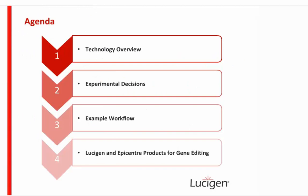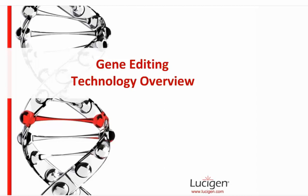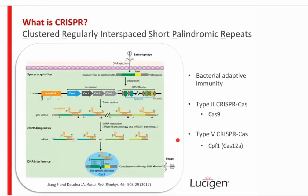For today's presentation we'll start with a technology overview — a brief background about CRISPR, how it works, and how it works in the lab. Then we'll go into some experimental decisions, because when you're first starting out there are a lot of decisions that need to be made. Then we'll talk about an example workflow in mammalian cell culture and go through each of the steps. Lastly, we'll end with a list of products we have for gene editing.